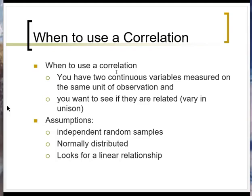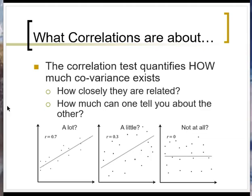One thing to keep in mind is that this correlation is only looking for linear relationships. If we have nonlinear relationships, we will miss that with a Pearson's correlation. Just like all inferential statistical tests, the correlation is trying to quantify something — specifically, how much of the variation in these two different variables occurs in unison. How much could you tell about one just by knowing something about the other? If two variables are closely related with a high correlation value, you'd expect them to be clustered pretty tightly.